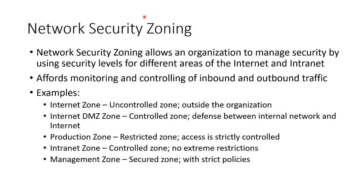We can divide our network into security zones, which determines how much protection you put on each. The internet is totally uncontrolled and outside our scope. The DMZ is controlled — it's an area between the internet and the internal network that needs some controls but must be publicly accessible. There's a production zone that is restricted with strictly controlled access. The intranet is controlled but used normally without extreme restrictions. There may also be a management zone for IT that is secured with strict policies. You work with your network and system administrators to figure out the zones because different levels of security must be applied to different zones.